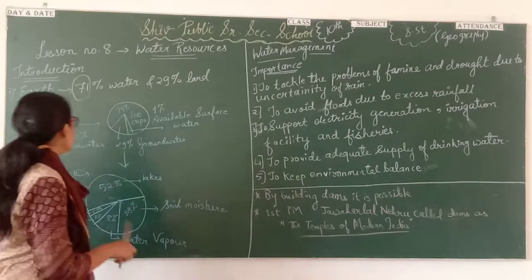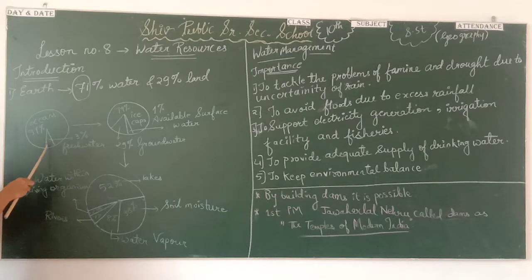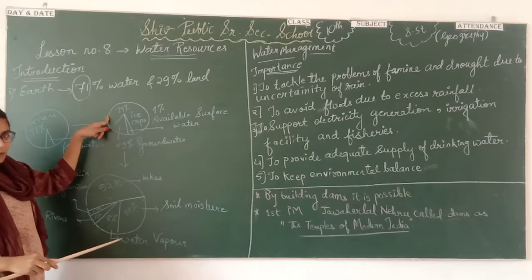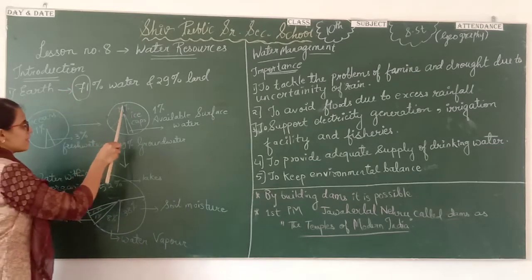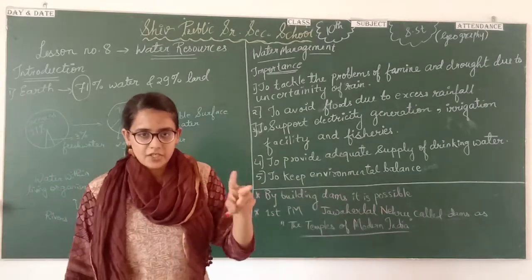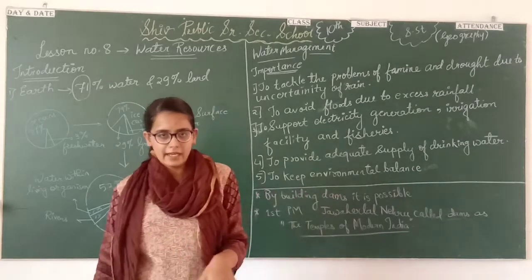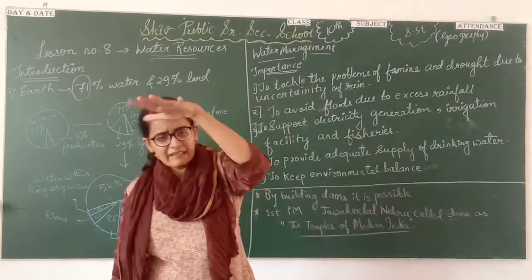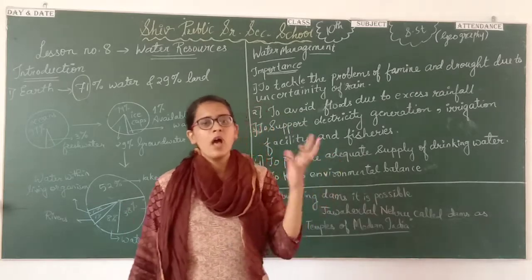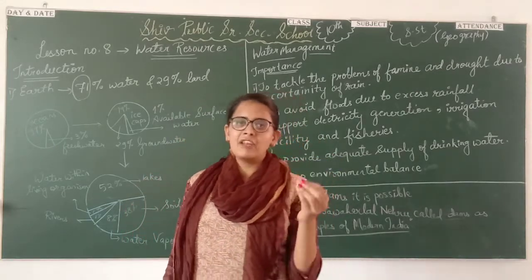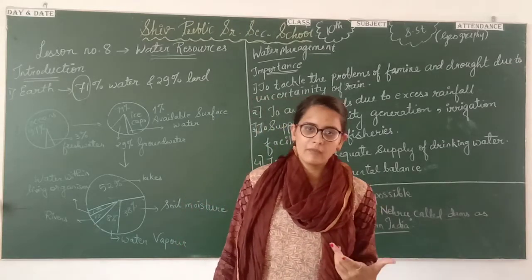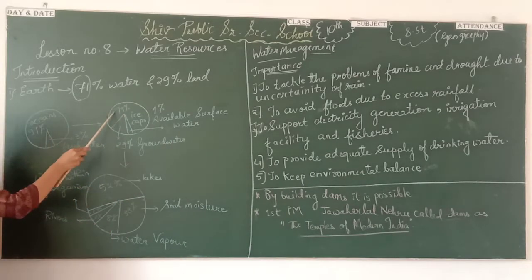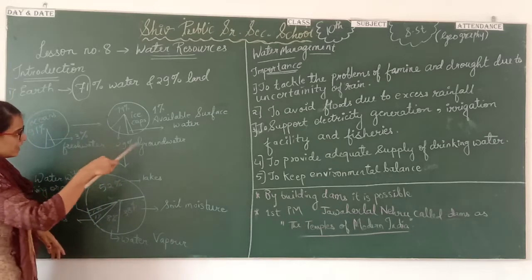Now we are going to see the division of this 3% fresh water. If we take this 3% as 100%, then 79% of it is in the form of ice caps — snow, glaciers, and ice caps. This includes Antarctica, the North Pole, the Arctic region, Greenland, Canada, Alaska, Denmark, and Norway. Water in this ice form is not directly consumable — we cannot drink that water. And 29% of fresh water is groundwater.